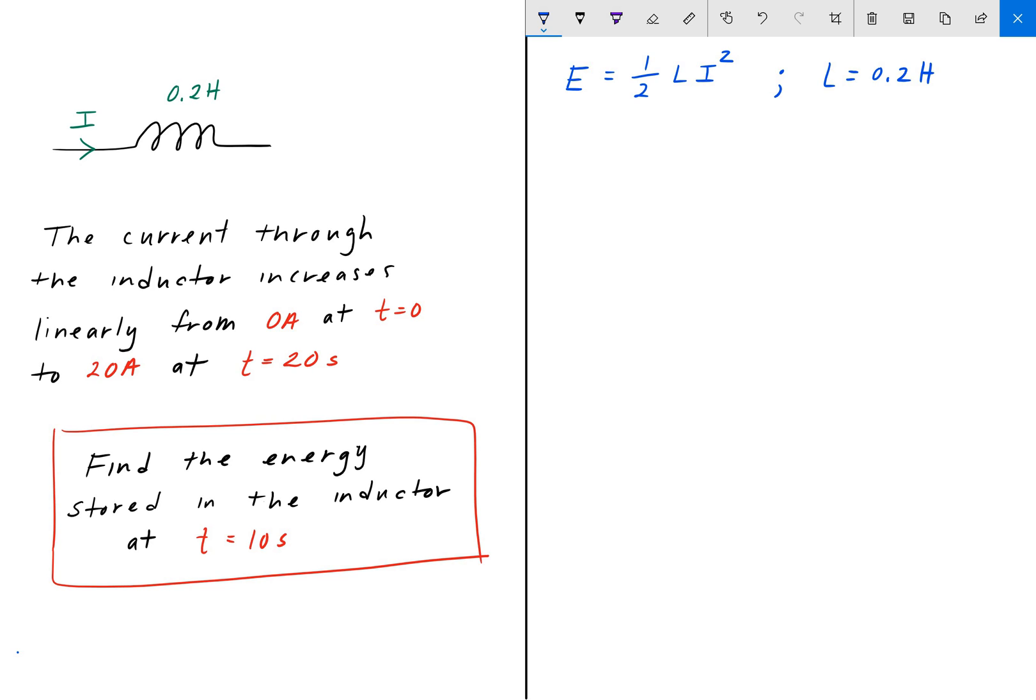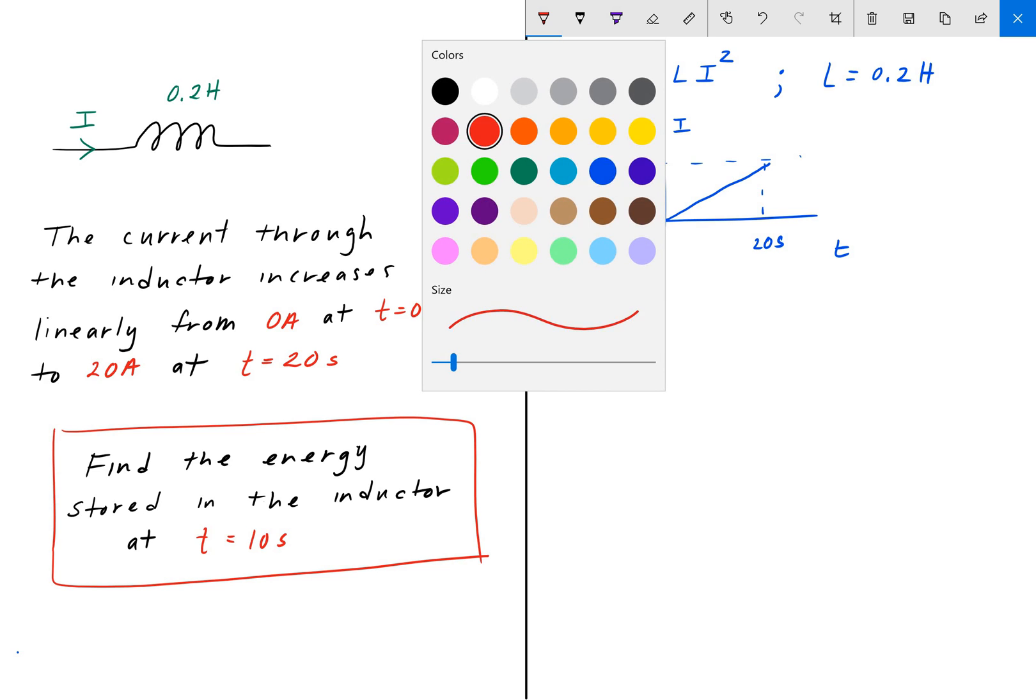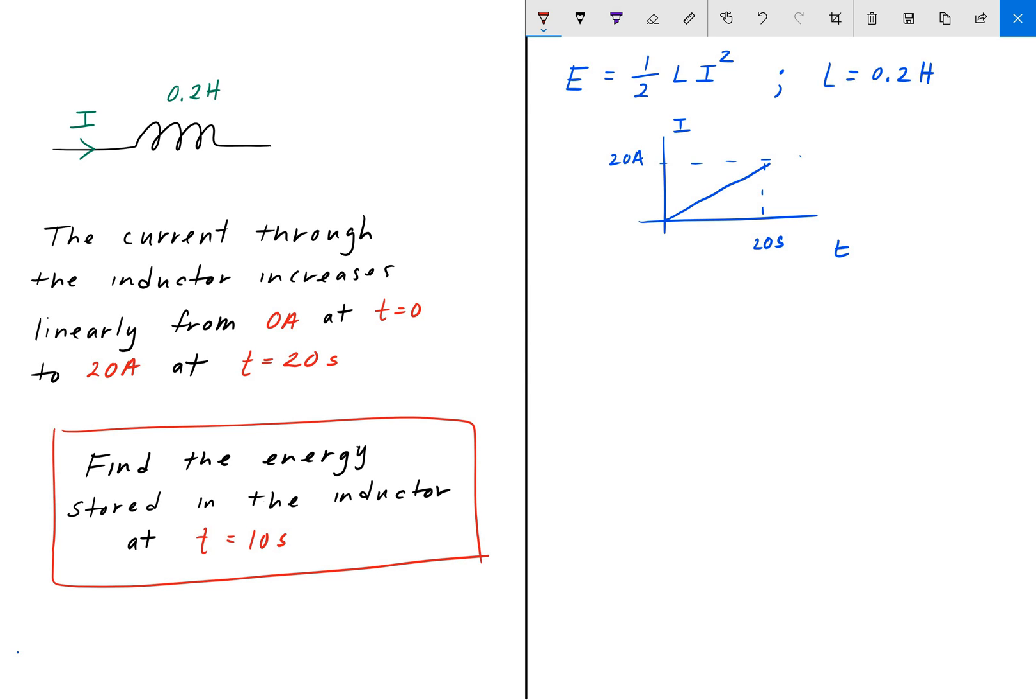To do that, we can plot this out. We can do a current versus time graph where it reaches 20 amps at 20 seconds. We know that it's going to increase linearly up until 20 amps. Now, we are looking for the current at time equals 10 seconds. That's roughly here. Because it's linear, at 10 seconds we'll have 10 amps.